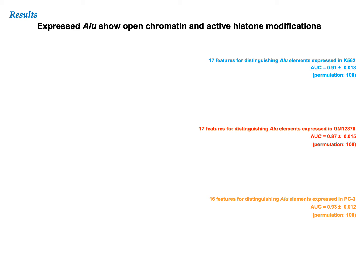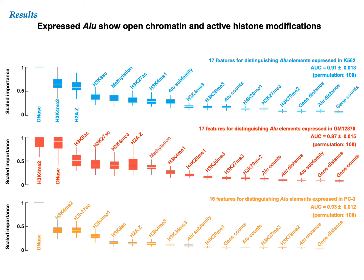We put the 17 epigenetic signals into a random forest classifier for each cell line, and these three classifiers performed very well, showing AUC of 0.91, 0.87, and 0.93 respectively, very close to the AUC of 1 for a perfect classifier. We asked which epigenetic signals were the most important for the excellent performance of these random forest classifiers. And across all three cell lines, chromatin accessibility and histone marks associated with active enhancers, such as H3K4me2 and H3K27ac, showed the highest importance.